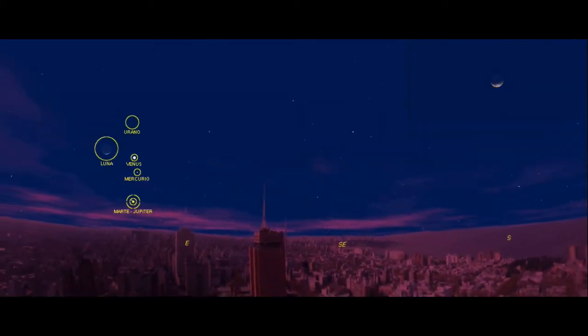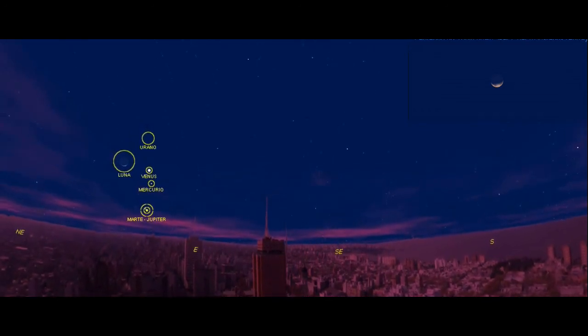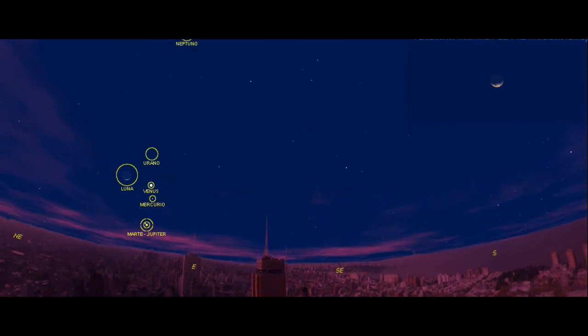Mercurio, en fase decreciente, se apreciará mejor con prismáticos. Urano y Neptuno sólo serán visibles con potentes telescopios.